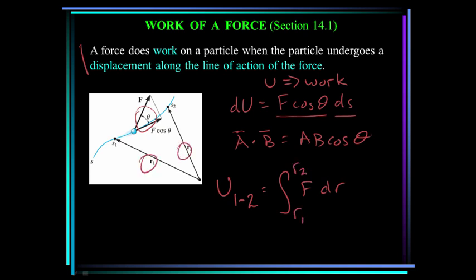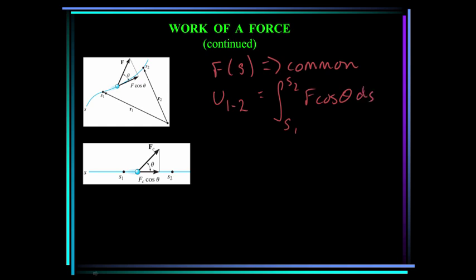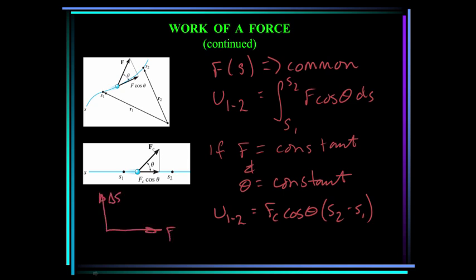R1 and R2 are these two vectors here. Now if F is some function of displacement, this equation becomes the work between points 1 and 2 is equal to the integral from S1 to S2 of F cosine theta dS. If F is a constant and theta is a constant, we can write the work between points 1 and 2 as the constant force times cosine of theta times S2 minus S1. Work is positive if the force and the movement are in the same direction. If they are opposing, then the work is negative. If the force and the displacement are at right angles to each other, the work is zero.